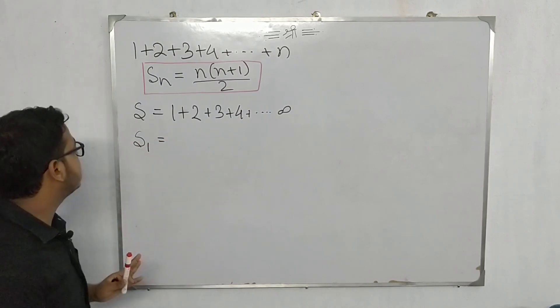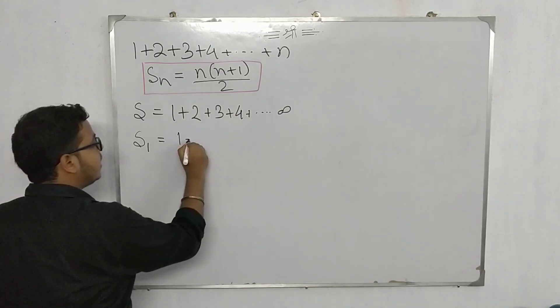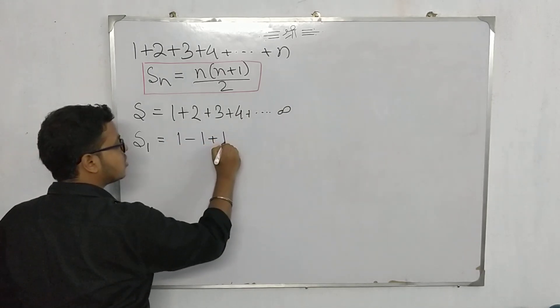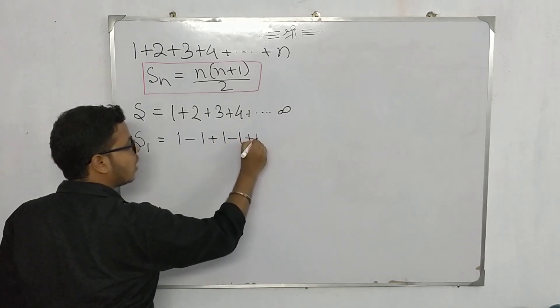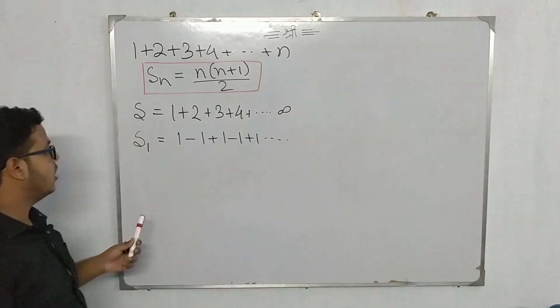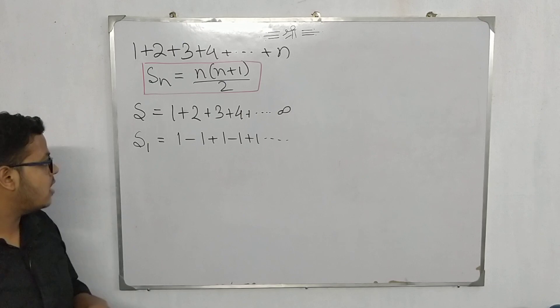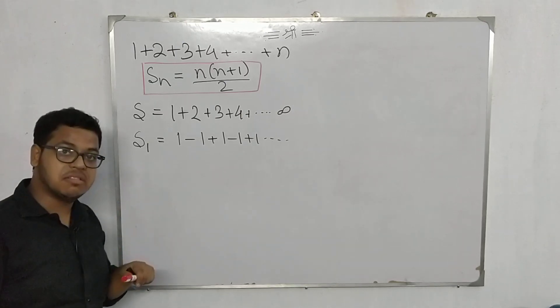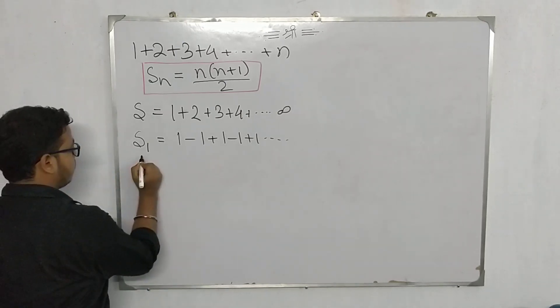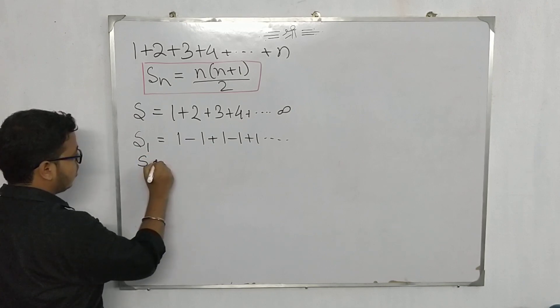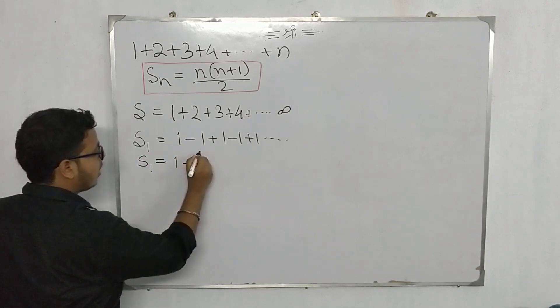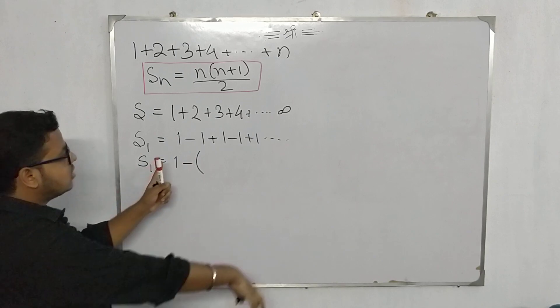s₁ is one series which we need to calculate. It is 1-1+1-1+1 and so on up to infinity. So we have to calculate the sum of this series. This is known as the Grandi series.